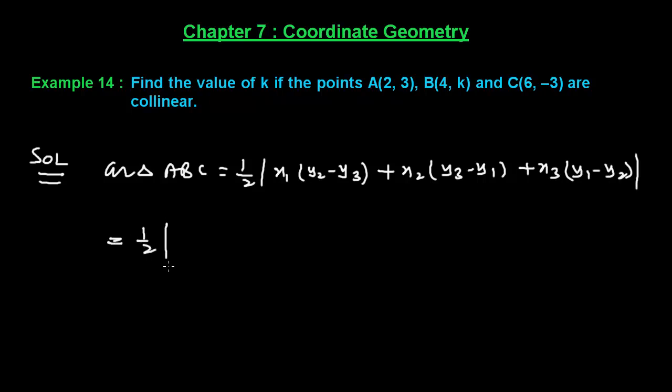This equals 1/2 times the absolute value of: x1 is 2, y2 is K, y3 is -3, so we have 2(K+3) plus...